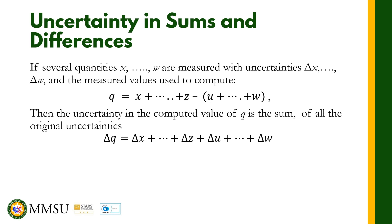The first rule is for uncertainty in sums and differences. If we have a measured value Q equal to the sum or difference of certain quantities, let us simplify using two quantities. For example, Q is equal to X plus Z. We have uncertainty for X and uncertainty for Z. X is given as the mean value of X plus or minus the uncertainty in X, and for Z we have the mean value of Z plus or minus the uncertainty in Z.